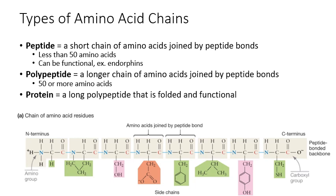We also have special names for different types of amino acid chains. The smallest type is called a peptide, with 50 or fewer amino acids. Peptides can be functional — for example, endorphins are signaling molecules in the brain that reduce pain perception, and they are actually peptides. A chain longer than 50 amino acids is called a polypeptide, which could be up to thousands of amino acids long.